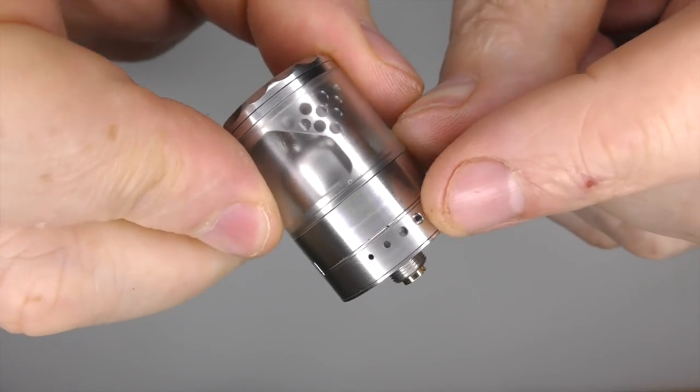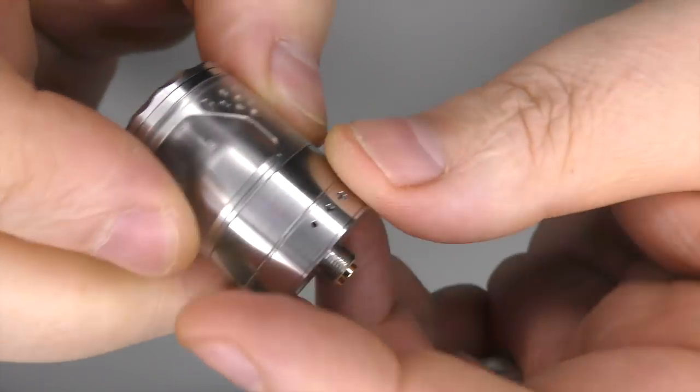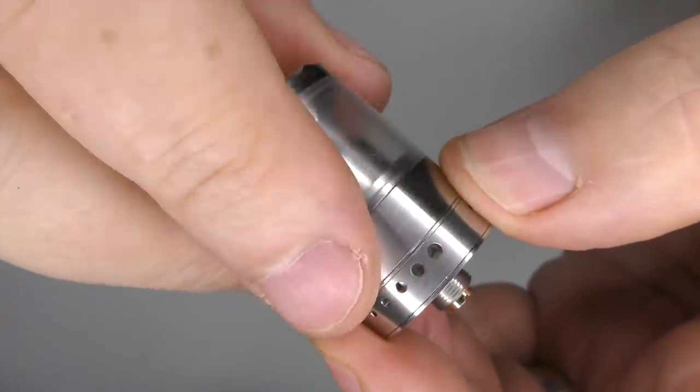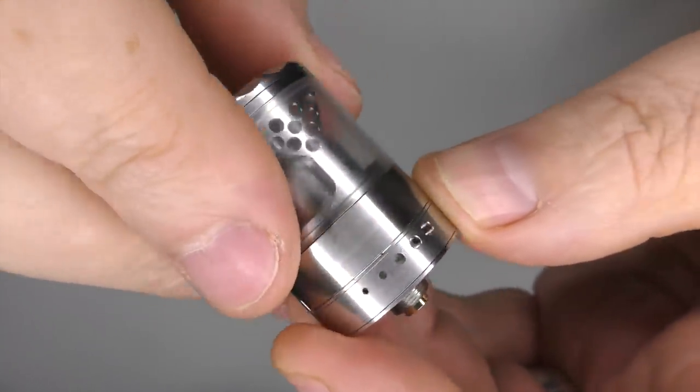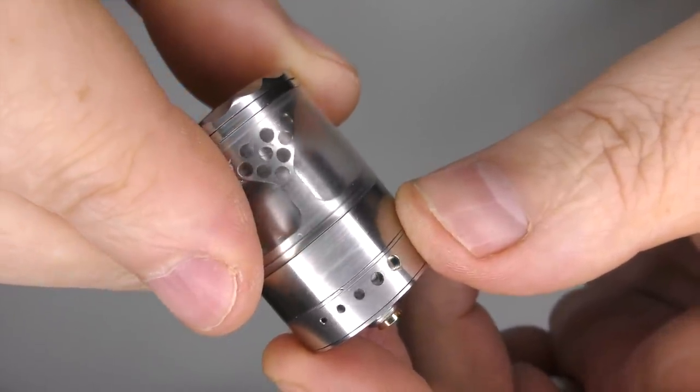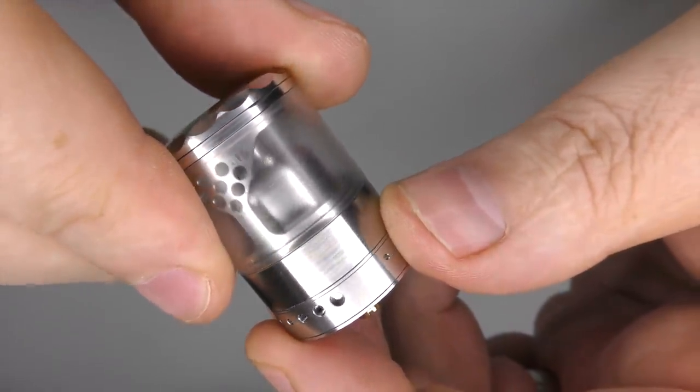Going down here, we have our airflow control ring, and this can be double-sided. Now, the air hole sizes that we have are the AFC hole sizes. You've got, starting from the smallest, you've got 0.8, 1.1, 1.4, 1.7, and 2 millimeters.